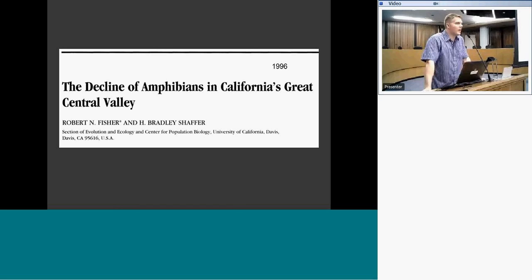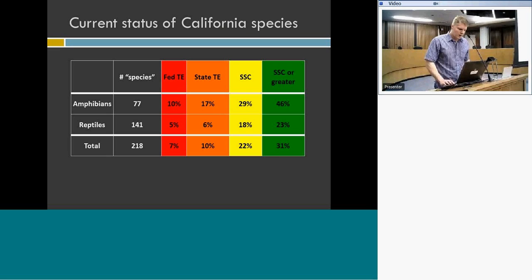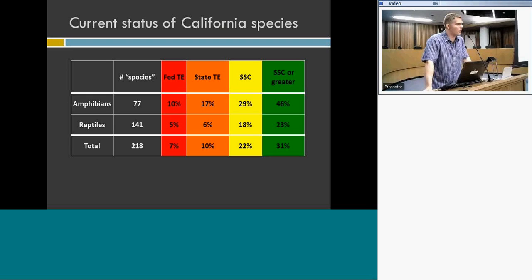This decline in native aquatic species doesn't apply just to fishes but also to many of our pond-breeding aquatic-associated amphibians here in California. A professor at UC Davis, Brad Schaefer, published a study in the 1990s finding that many amphibian species in California's Central Valley were becoming far less common and disappearing from previously known locations. When you look at the status of native amphibian and reptile species, for amphibians it's particularly concerning — almost one-half of them are either species of special concern or protected as threatened or endangered under state or federal law.